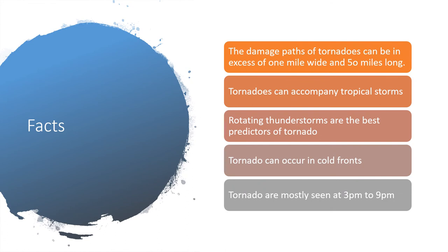Facts about tornadoes: the damage path of tornadoes can exceed 1 mile wide and 50 miles long. Tornadoes can occur with tropical storms, and rotating thunderstorms are the best predictors of tornadoes. Tornadoes can also occur in cold fronts, and are mostly seen between 3 PM to 9 PM.